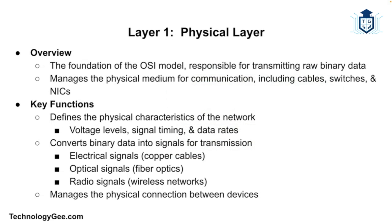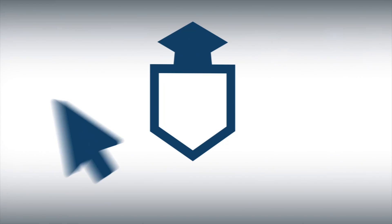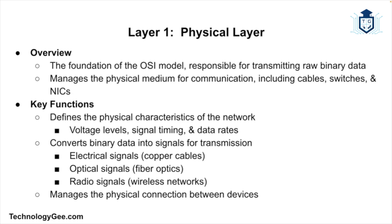Let's talk about Layer 1, which is known as the Physical layer. The Physical layer is the foundation of the OSI model, responsible for the transmission of raw binary data over a physical medium. This layer includes the hardware elements of networking such as cables, switches, and network interface cards. Its key functions include defining the physical characteristics of the network such as voltage levels, timing, and data rates.